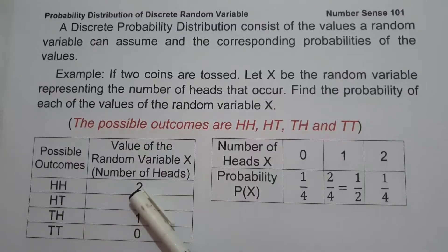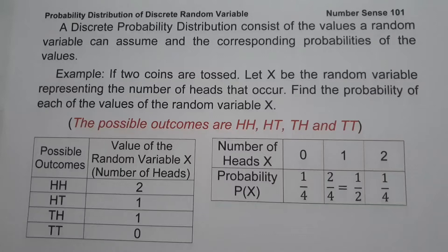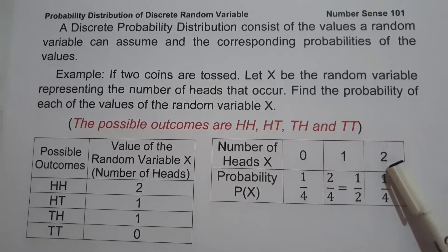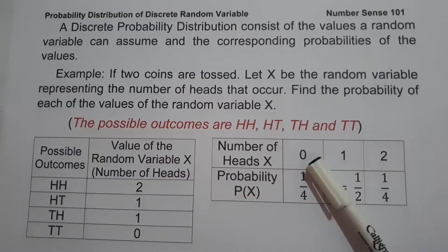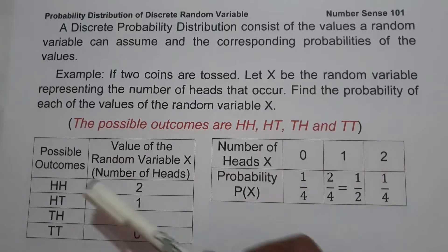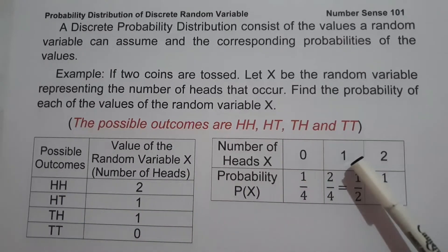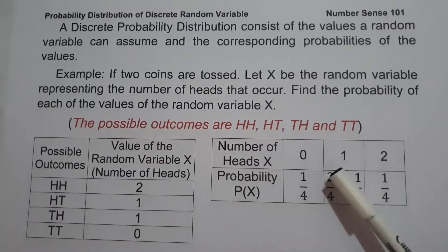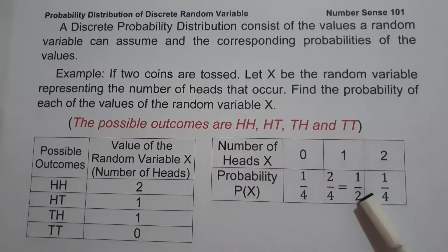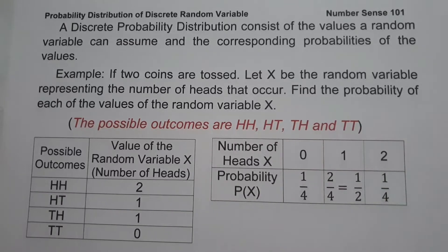As you can see, there are two heads in the first outcome, then one, one, and zero. So there are three possible values for the random variable X: zero, one, and two. The probability of getting zero heads is 1 over 4. The probability of getting one head is 2 over 4, which simplifies to one-half. And the probability of getting two heads is 1 over 4.